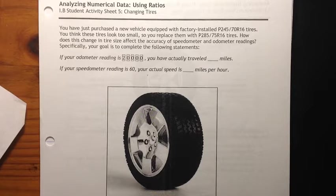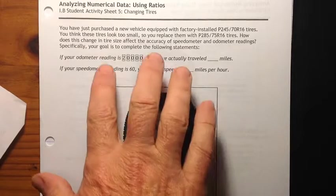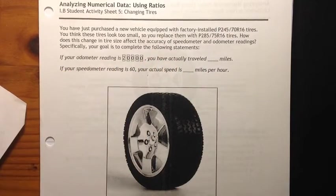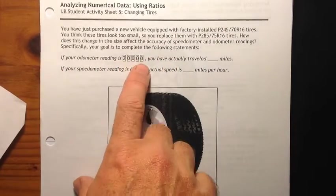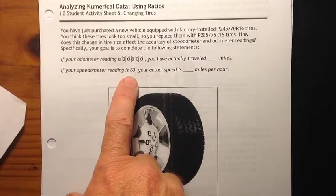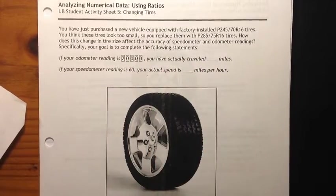Speedometer being how fast you're going and odometer how far you've gone. Specifically, your goal is to complete the following statements. So this is what we're heading toward, just filling in the blanks here. If your odometer reading is 20,000 miles, you have actually traveled blank miles. And if your speedometer reading is 60, your actual speed is blank miles per hour.